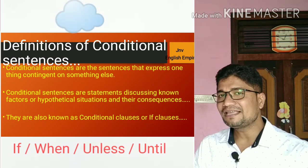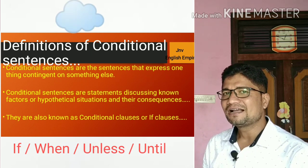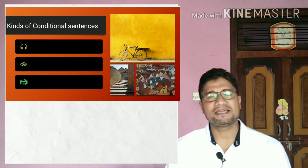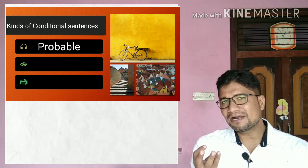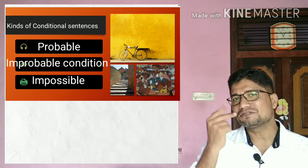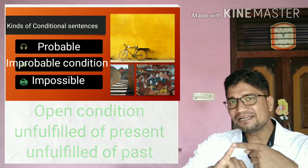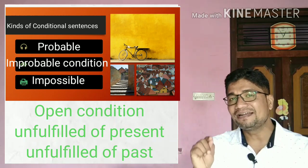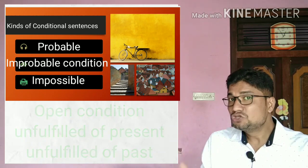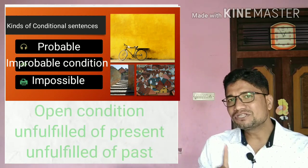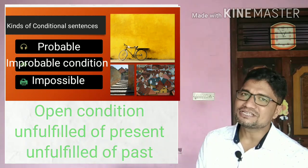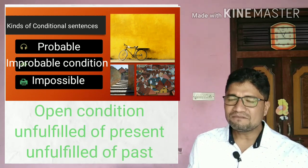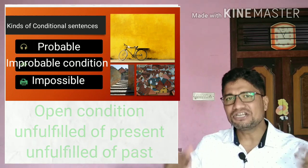Now let's see how many kinds of conditional sentences there are. Based on conditions, conditional sentences are of three kinds: probable condition, improbable condition, and impossible condition. Your probable condition is the open condition. Your improbable condition is the unfulfilled condition of the present — a condition of the present that cannot be fulfilled. And impossible condition is the condition that could not be fulfilled in the past. Now, one by one, we will try to learn all kinds of conditions and conditional sentences.